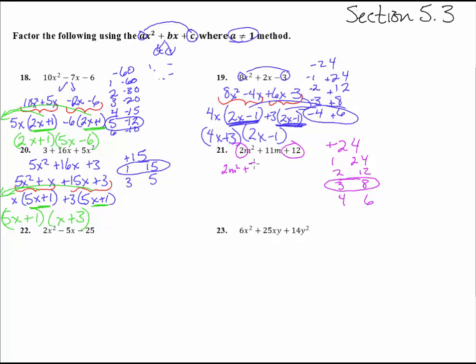2m squared plus 3m plus 8m plus 12. Chop that in half. We now have 4 terms, so we pull out an m and we've got 2m plus 3. Pull out a 4, we have 2m plus 3. Good deal. And we see the 2m plus 3 here and the 2m plus 3 here, so we pull that guy out. And we get 2m plus 3 and m plus 4.